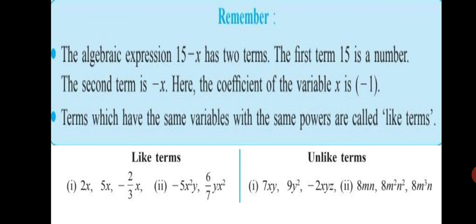Now, let's have a look at unlike terms. First example, 7xy, 9y square and minus 2xyz. You will see that the variables are different. So, they are called unlike terms.